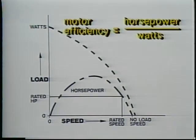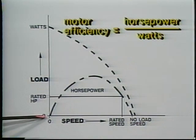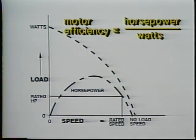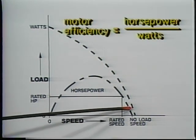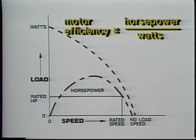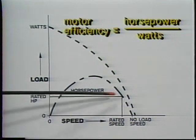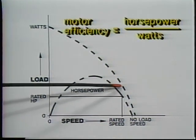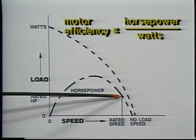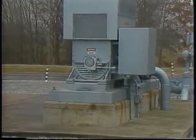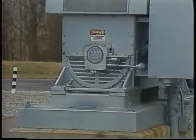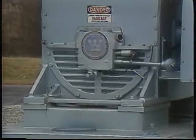We can see how the efficiency of a motor varies if we plot watts and horsepower together. At stall, the motor is producing no horsepower but watts input is very high because the motor is drawing a lot of current. At no-load speed, watts input is low but horsepower is zero again, so efficiency is zero. At rated power, a motor is consuming a lot of watts but also producing a lot of horsepower, so efficiency is quite good.